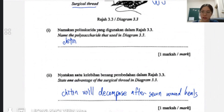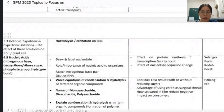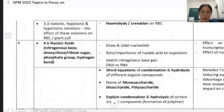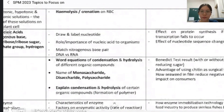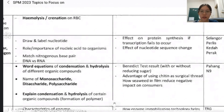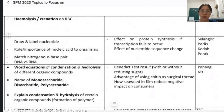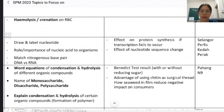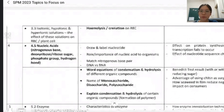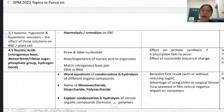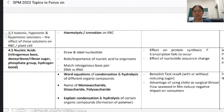That's all for this chapter. For Chapter 4, focus more on nucleic acid — know how to draw it, the importance, how to explain effects on protein synthesis if transcription fails or mutation occurs. That's all for today. I'll see you in the next video. Thank you so much for watching — don't forget to subscribe to my channel!